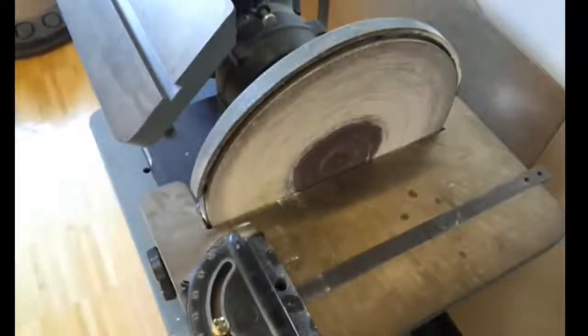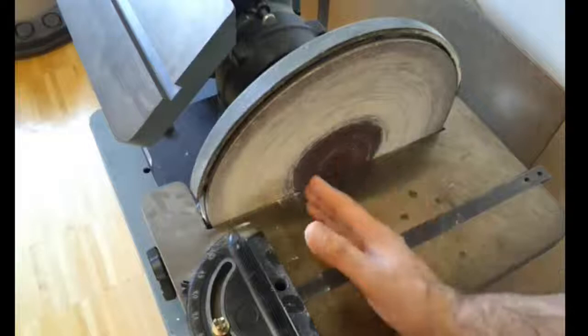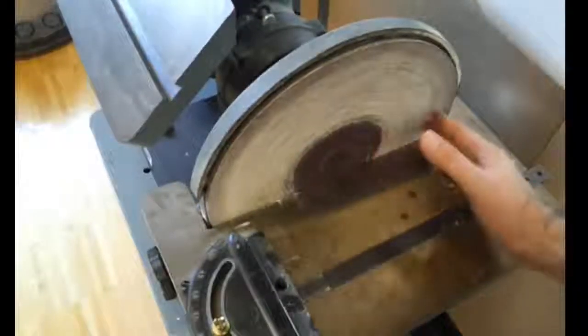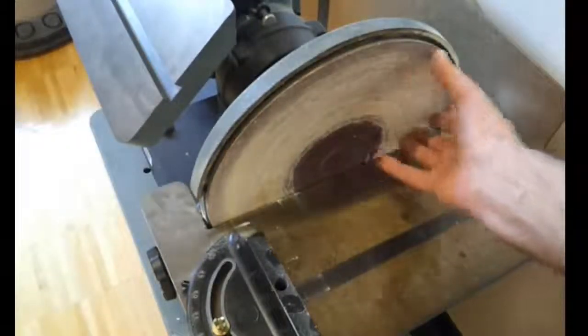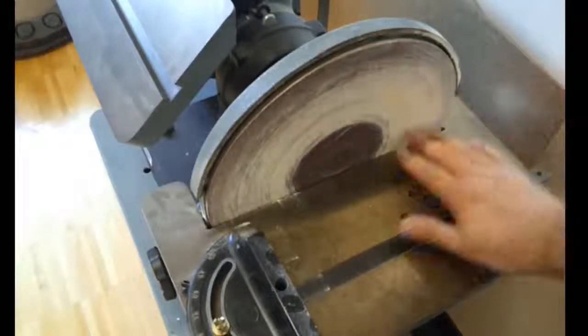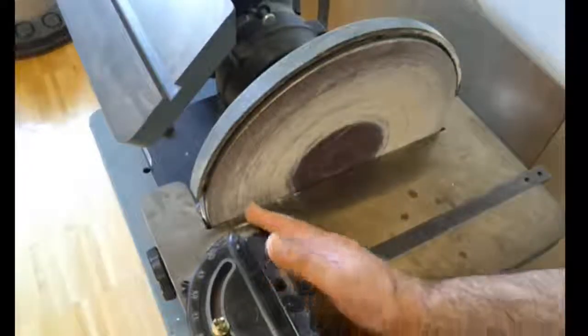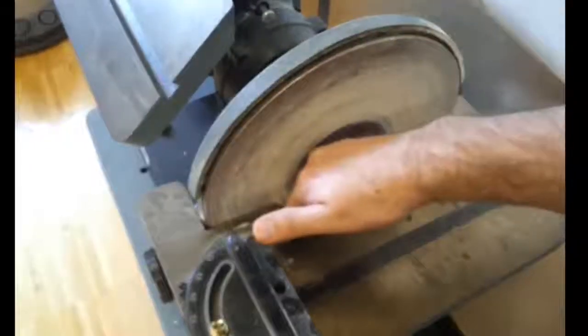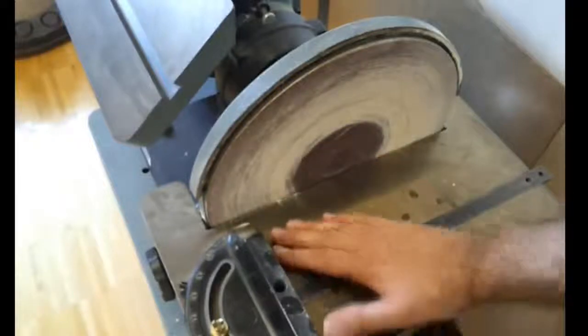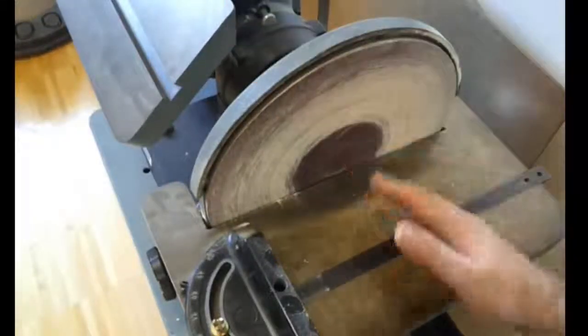To use the sander, we're going to always keep our piece on the first half of the disc. You never want to work on the back side as the disc is rotating in this direction. If you're on the back side, it's going to want to lift the piece up and it's also going to throw a lot of sawdust at you. If you're on the front side, the sandpaper is pushing down on the block, holding it to the table, and the dust goes into the dust collection system. So it's always best to keep it on the front side.